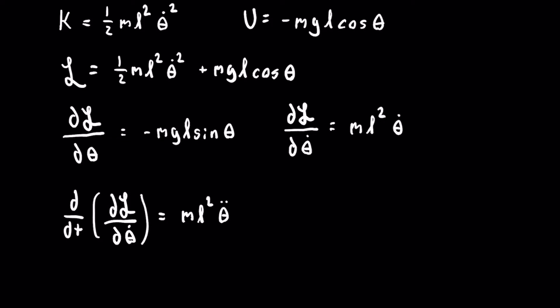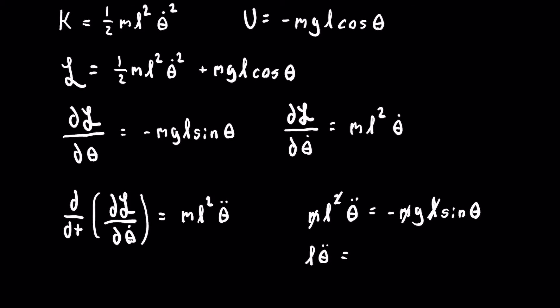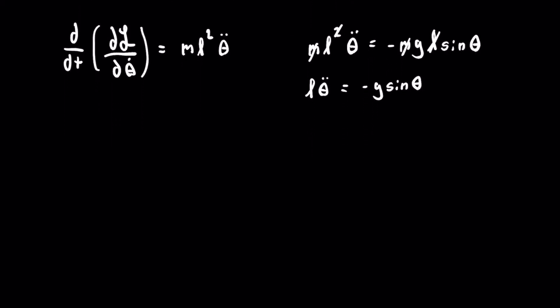Going back to our original equation, we equate this to the partial of the Lagrangian with respect to theta, and we get that ml squared theta double dot is equal to negative mgl sine of theta. There are clearly a few things we can cancel — the m's and one of the l's — so rewriting this we get that l theta double dot is equal to negative g sine of theta. This differential equation is typically written as l theta double dot plus g sine of theta equals zero.